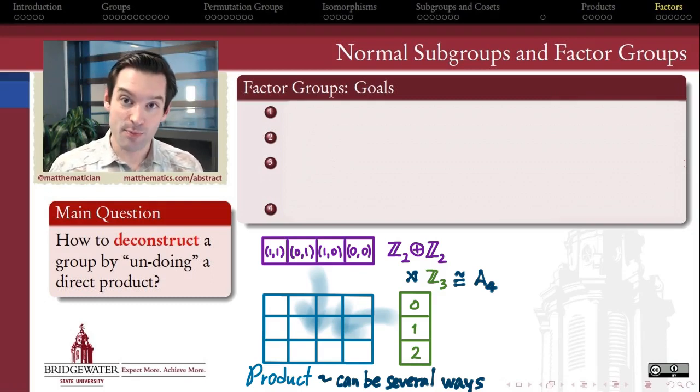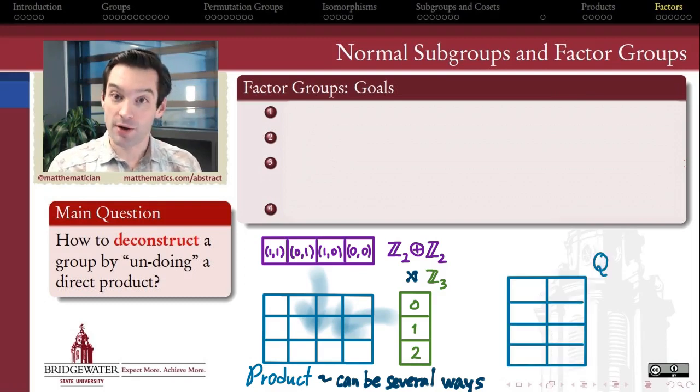So products give us a way of piecing together groups into larger structures. We want now to turn our attention to the opposite. How do I break apart a group into its constituent pieces?